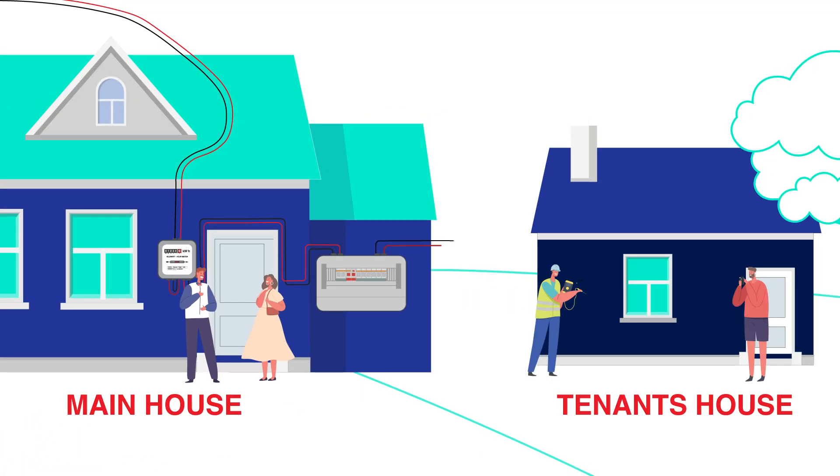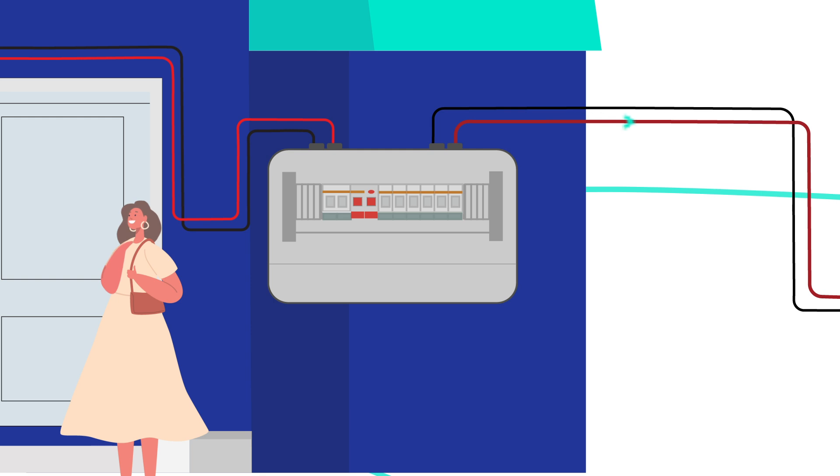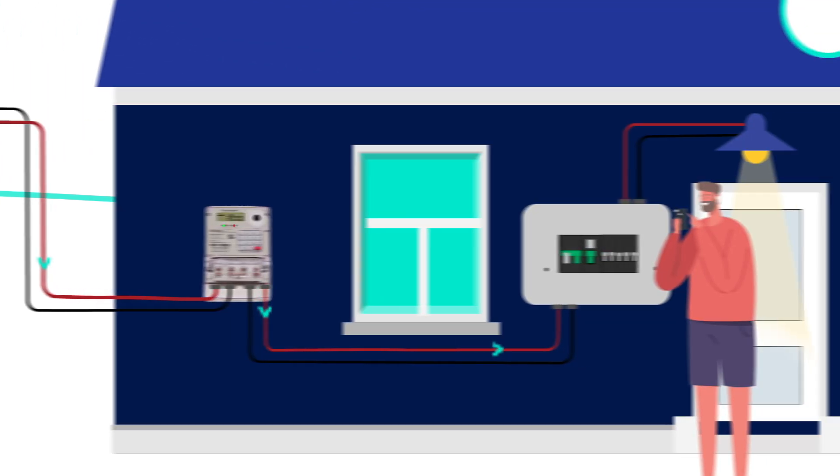It is installed between the main DB board and before the sub DB board within the tenant's premises. This allows the landlord to separately manage the tenant's electricity consumption.